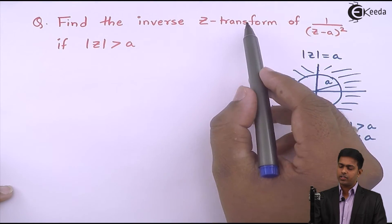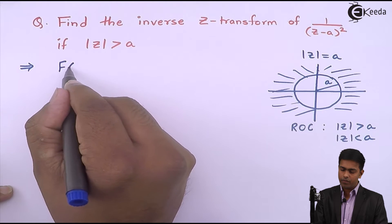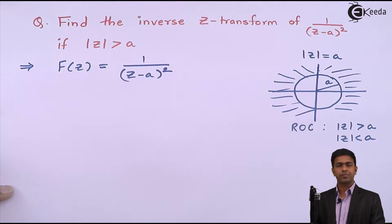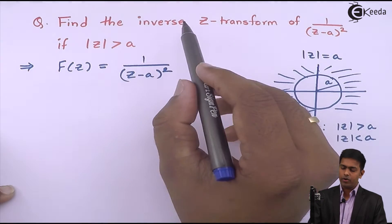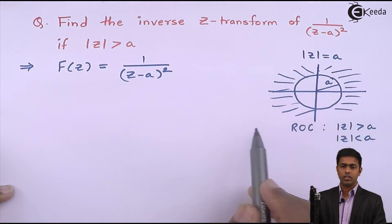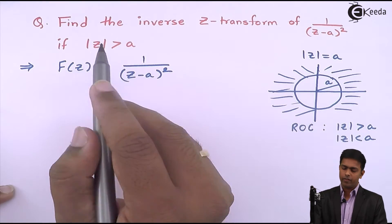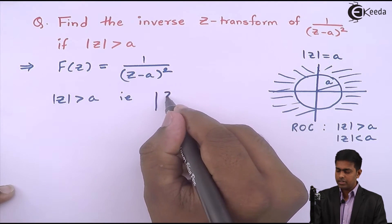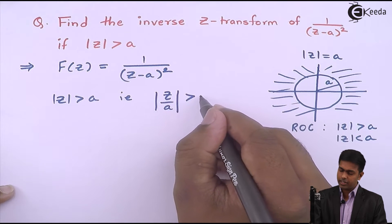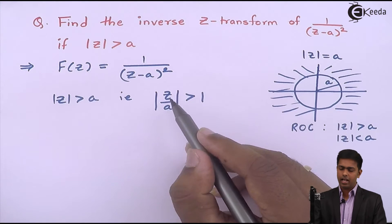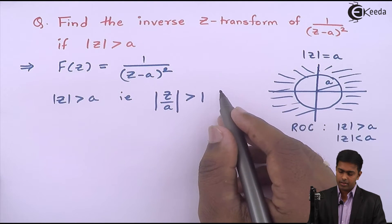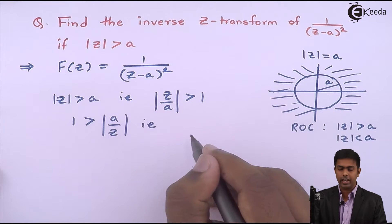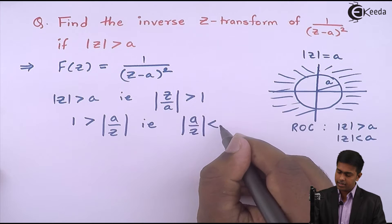As we want to find out the Z transform of this given function, let F of Z equal 1 upon (Z minus A) the whole square. To find the inverse Z transform in this region of convergence, starting from mod Z greater than A, I can say it is nothing but mod Z by A greater than 1. Taking A and Z to the other side, we get 1 greater than mod of A by Z — that is, A by Z is less than 1.